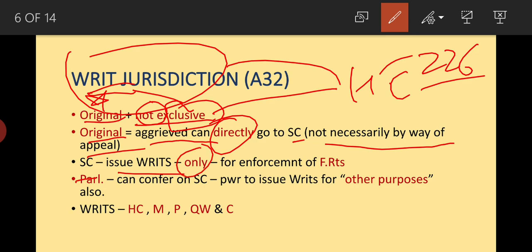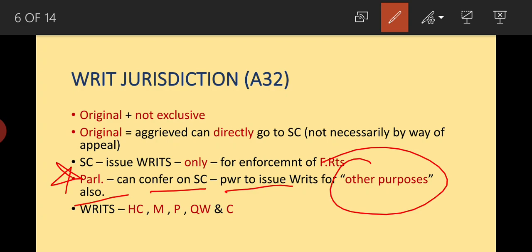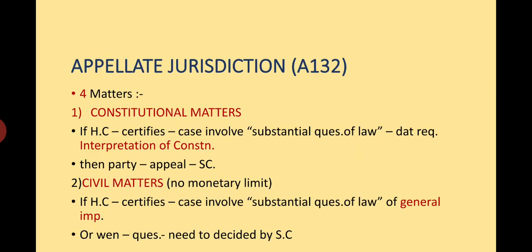The Supreme Court can issue writs only for the enforcement of fundamental rights, but High Courts can issue writs for enforcement of fundamental rights as well as for other purposes. Importantly, Parliament can also confer on the Supreme Court power to issue writs for other purposes. There are five types of writs.